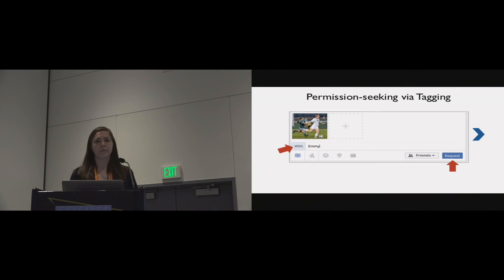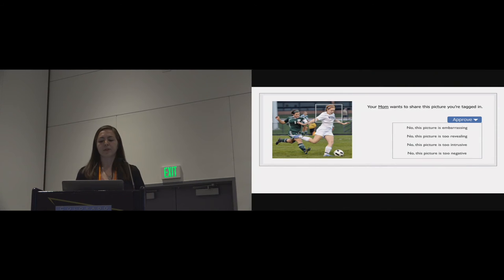Platforms could also facilitate permission-seeking by allowing parents to tag their children in posts before they are published, and then allow the child to either approve the post or reject it and provide some reason for doing so, such as no, this picture is too revealing. This would allow parents to better understand their children's preferences in a non-confrontational, supportive interaction.